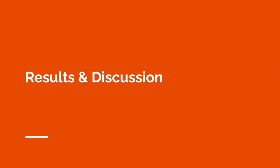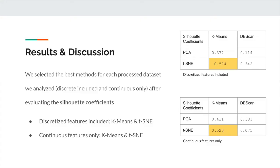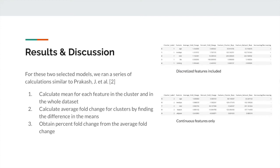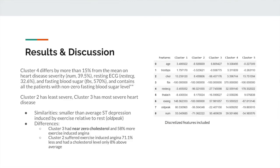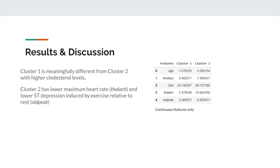To analyze our results, we first compared our clustering methods using silhouette coefficients. For both datasets, we found that k-means with t-SNE performed the best. Next, we quantified differences between the clusters and the average in order to find characterizing features of each cluster, using percent fold change calculations. We were able to identify differences between the clusters — for example, cluster 2 has the least severe and cluster 3 has the most severe heart disease. We also noted some oddities, such as clusters containing all patients with non-zero fasting blood sugar level, and in cluster 3, a severe lack of cholesterol. This may indicate something missed in data cleaning or some type of bias in measurements based on the facility and patient condition.